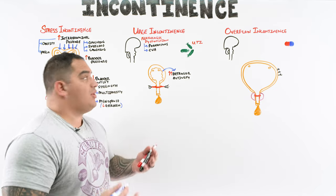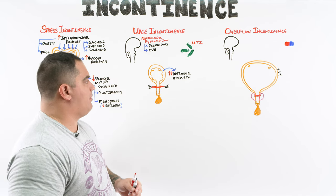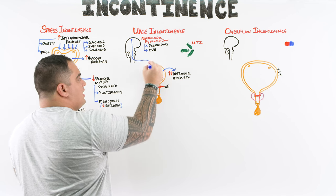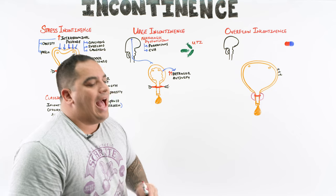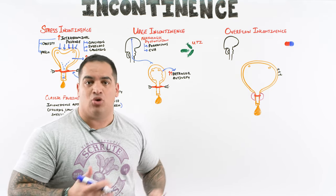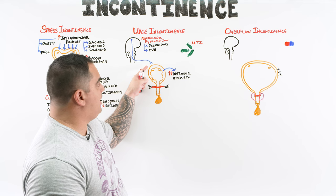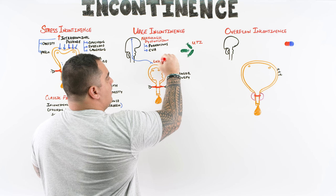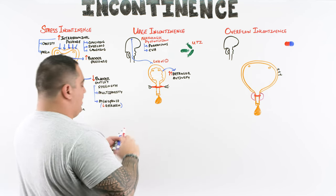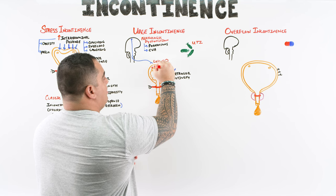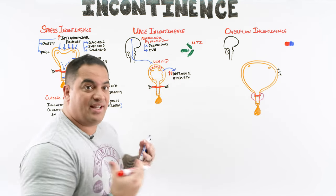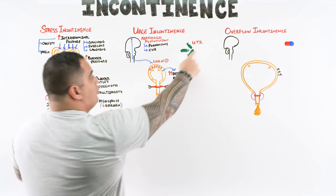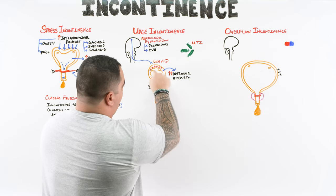In neurological diseases, neurons that normally exert inhibitory control over the detrusor muscle lose that function — a loss of inhibition. Without inhibitory input, the muscle becomes hyperactive, extremely stimulated, contractions increase, bladder pressure rises, and urinary incontinence results.